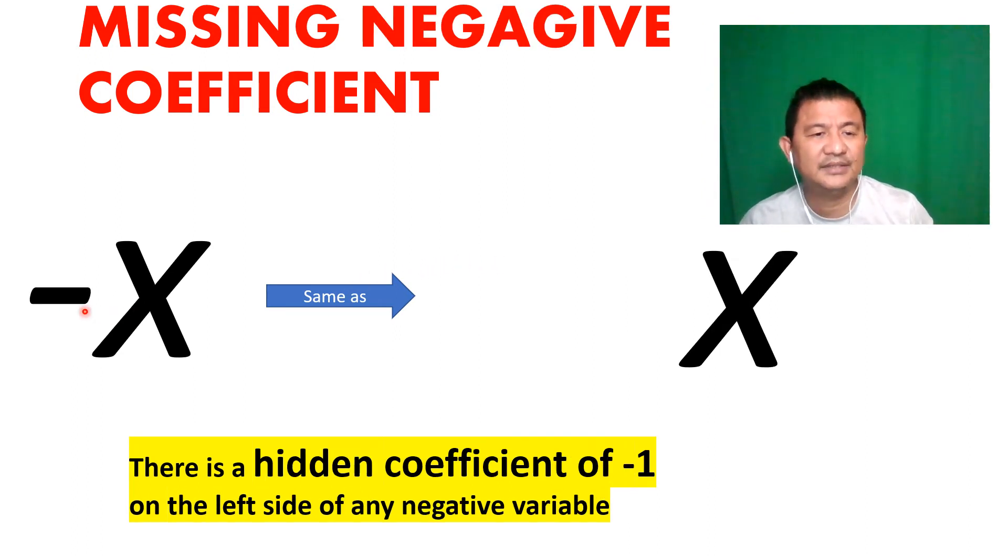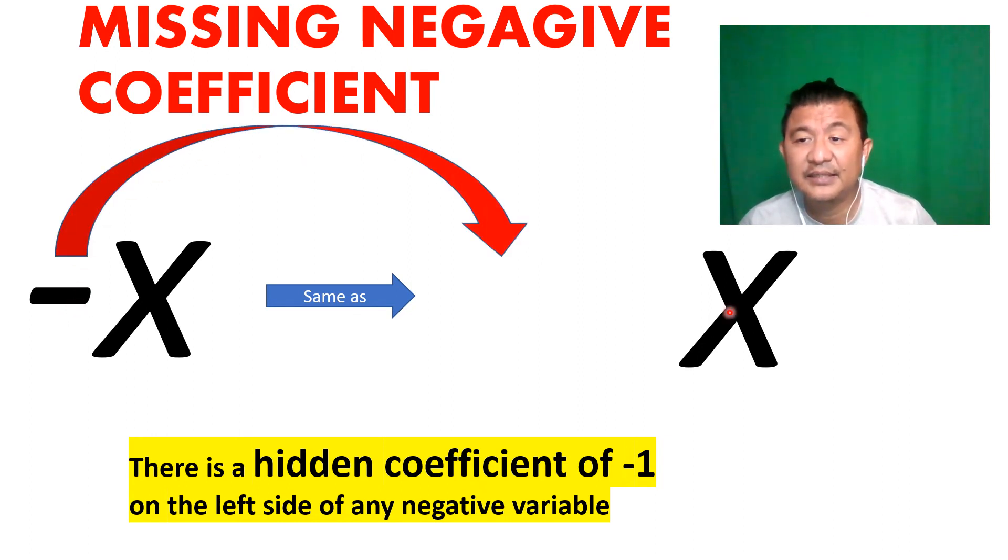Now that negative symbol would actually mean what? Times a negative one. If you see a negative x, that means a negative one times whatever value you have for x.